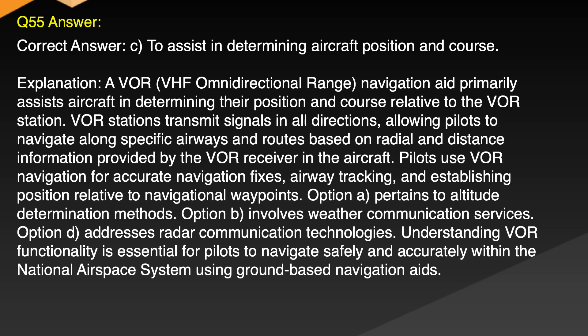Explanation: A VOR, VHF Omnidirectional Range, navigation aid primarily assists aircraft in determining their position and course relative to the VOR station. VOR stations transmit signals in all directions, allowing pilots to navigate along specific airways and routes based on radial and distance information provided by the VOR receiver in the aircraft. Pilots use VOR navigation for accurate navigation fixes, airway tracking and establishing position relative to navigational waypoints. Option A pertains to altitude determination methods. Option B involves weather communications services. Option D addresses radar communication technologies. Understanding VOR functionality is essential for pilots to navigate safely and accurately within the national airspace system.